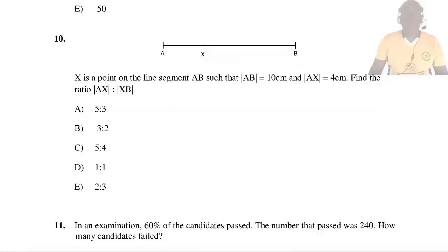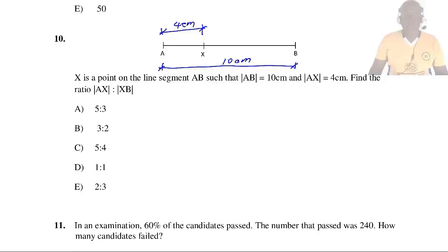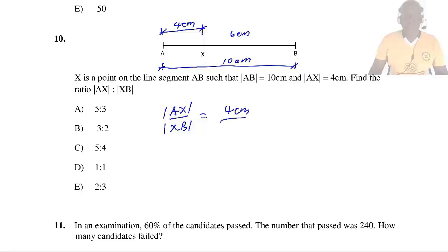Question 10: If S is a point on line segment AB such that |AB| = 10 cm and |AS| = 4 cm, find the ratio |AS| : |SB|. AB = 10 cm, AS = 4 cm, therefore SB = 6 cm. The ratio AS : SB = 4 : 6, which simplifies to 2 : 3. So the answer is E.